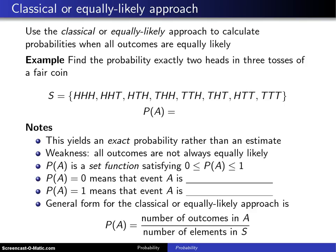This third technique, which is known as the classical or equally likely approach, actually gives you an exact probability rather than an estimate. You can use the classical or equally likely approach to calculate probabilities when all outcomes are equally likely.